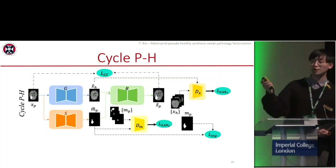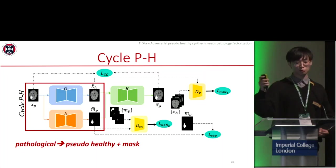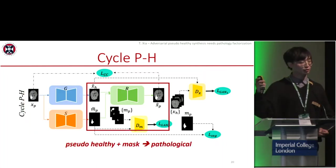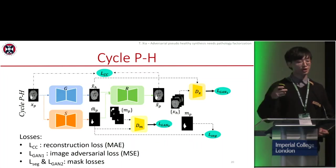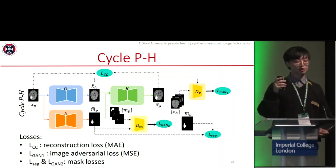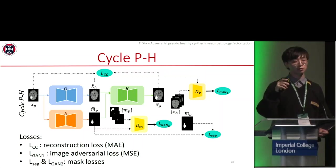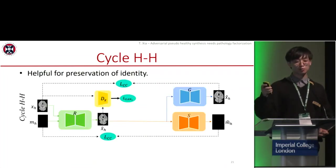Let's take a detailed look at cycle P2H. We start from a pathological image to get a pseudo-healthy image and a mask, and then reconstruct from the pseudo-healthy image and the mask. The losses in cycle P2H include LCC, which is the reconstruction loss between the input image and the reconstructed image, and LGAN1, which is an adversarial loss to make sure the pseudo-healthy images look healthy and realistic. We also have two mask losses.